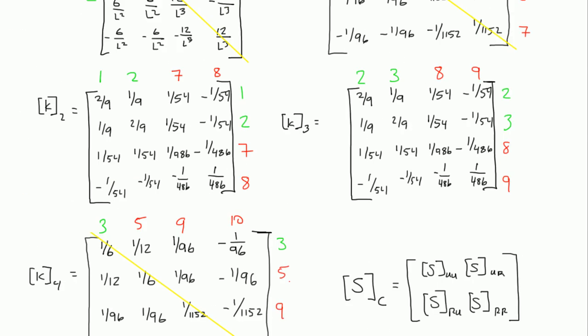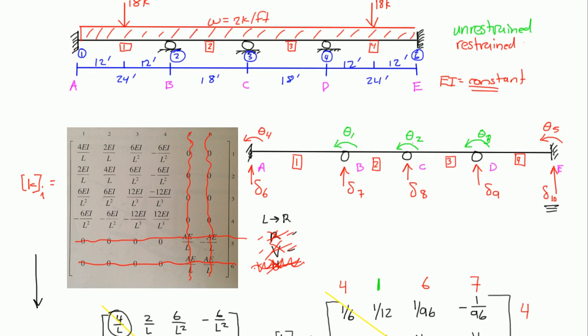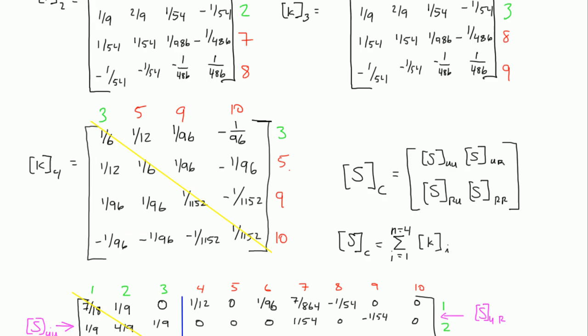And what we're going to do is basically come back to this diagram right here. Notice that there are four elements on this structure. So down here, we're going to draw four elements. We're going to draw element one, element two, element three, and element four.